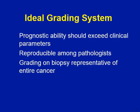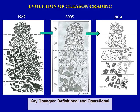An ideal grading system should have three parameters: its prognostic ability should exceed clinical parameters, it should be reproducible among pathologists, and grading on biopsy should be representative of the entire cancer. The original Gleason system devised by Dr. Gleason in 1967 has now been significantly modified, with two major revisions introduced in 2005 and more recently in 2014. The resulting modified grading system has important definitional and operational changes.